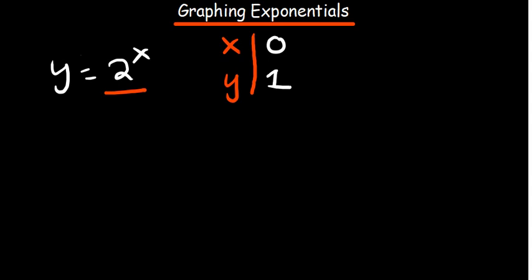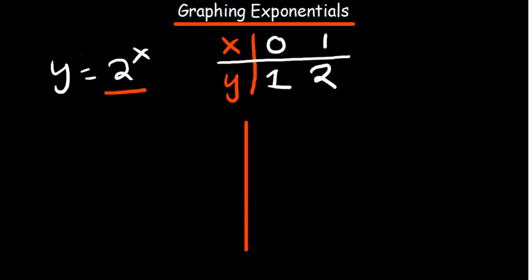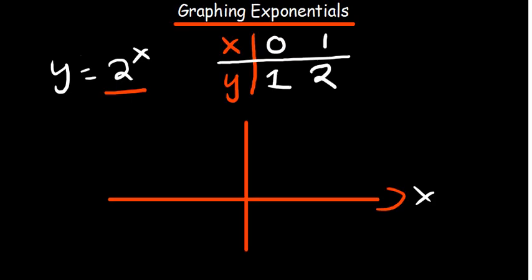The other value to work with is x equals 1, because raising anything to the power of 1 doesn't change it — so y equals 2. These two points are enough to sketch. You also need to know that the x-axis is the horizontal asymptote to that graph, meaning the graph does not cut the x-axis.